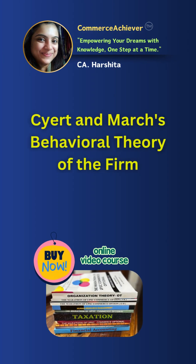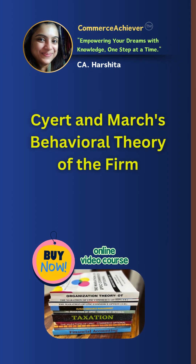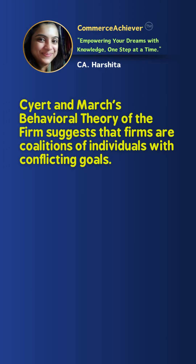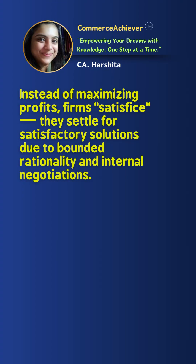The Cyert and March Behavioral Theory of the Firm suggests that firms are a coalition of individuals with conflicting goals. Instead of maximizing profit, firms satisfice — that is, they settle for a satisfactory solution due to bounded rationality and internal negotiation.